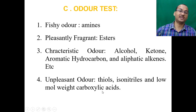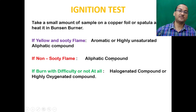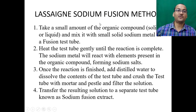Then we go for the ignition test. Take a small amount of sample on a copper foil or spatula and heat it in a Bunsen burner. If a yellow and sooty flame is observed, it may be an aromatic or highly unsaturated aliphatic compound. If it is a non-sooty flame, it may be an aliphatic compound. If it burns with difficulty or not at all, it may be a halogenated or highly oxygenated compound — halogenated compounds are generally used as fire retardants.